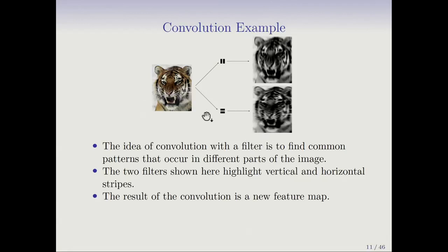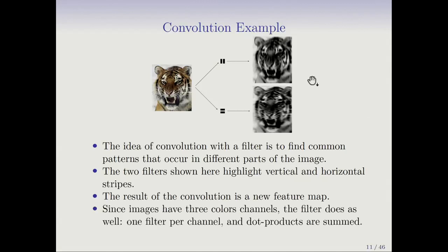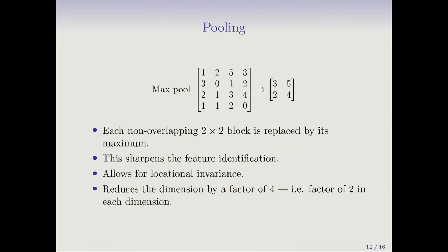The result of the convolution is a new feature map. This image consists of red, green, and blue channels. We're showing one filter here, but it's got red, green, and blue channels. When you do the convolution, it produces a new image, also a feature map. Since images have three colors, these filters do as well. You'll have a filter for the red, the filter for the green, and the filter for the blue. You do the dot product separately on the red, green, and blue, and then you add up the results. So from one color image, you get one new feature map. The weights in the filters are learned in the network.